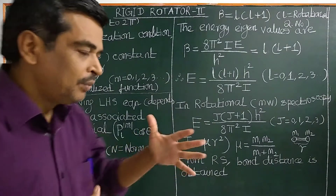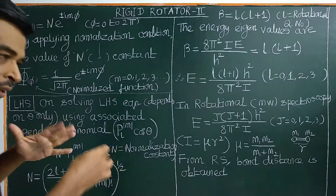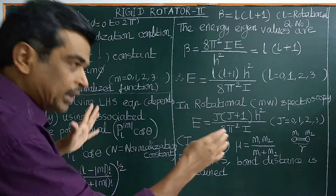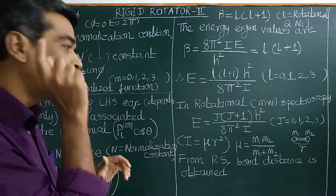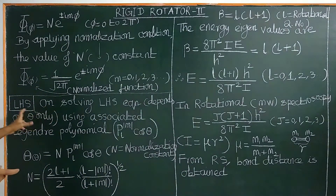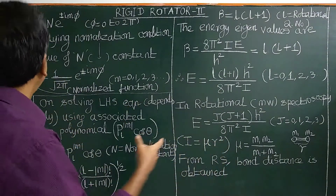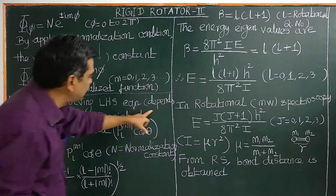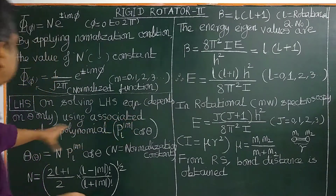Now, using separation of variables, we have separated the Schrödinger equation into two equations. The left-hand side and right-hand side equations each depend on only one variable. The left-hand side depends only on theta, whereas the right-hand side depends only on phi.